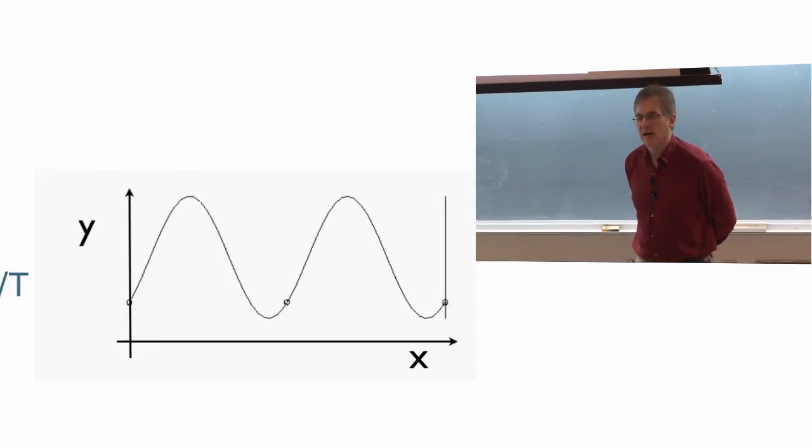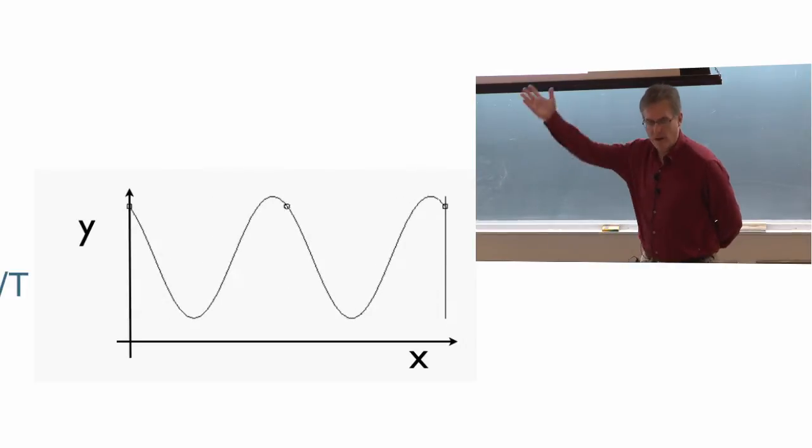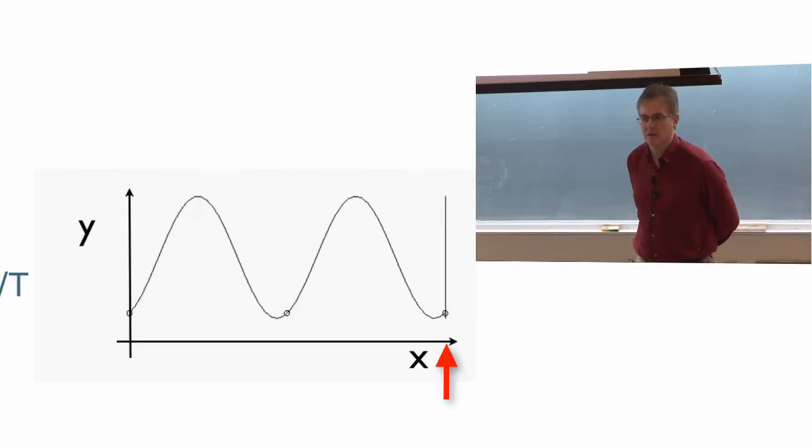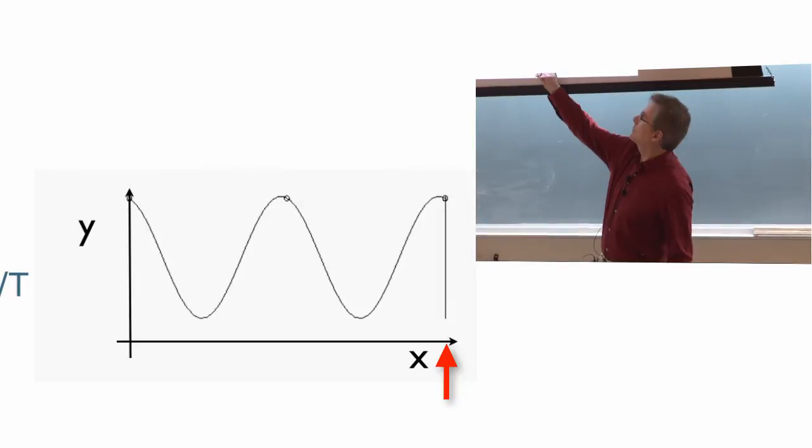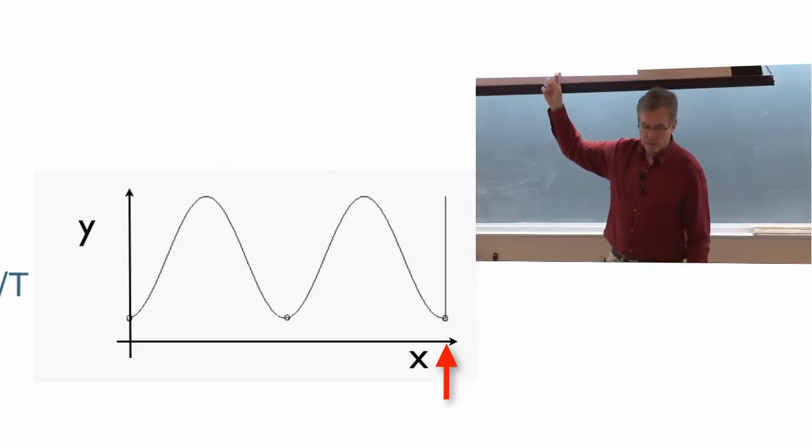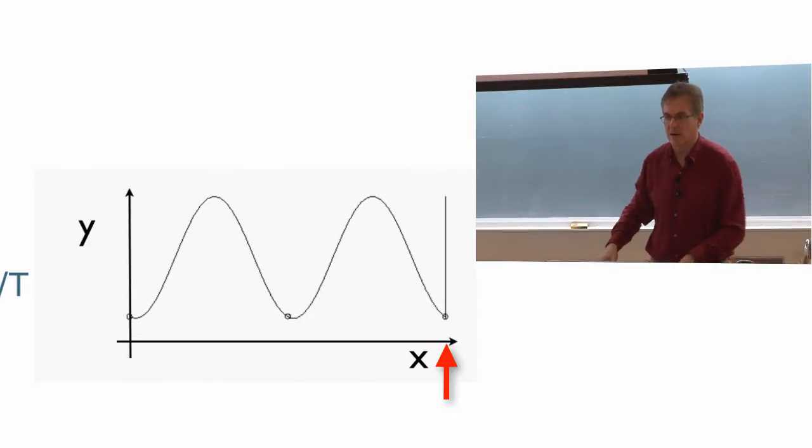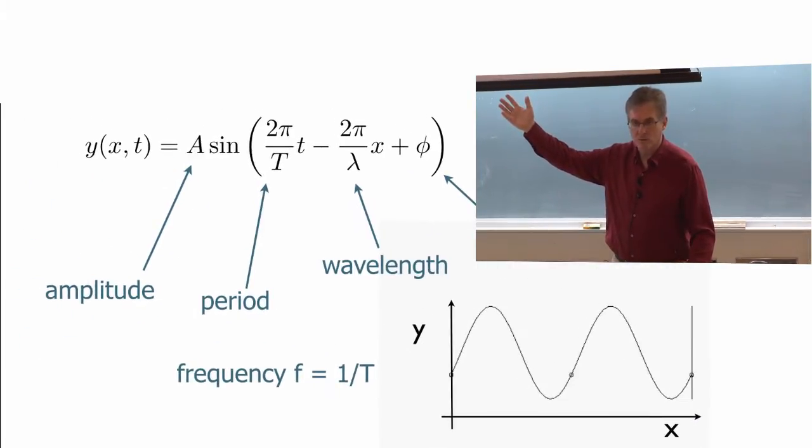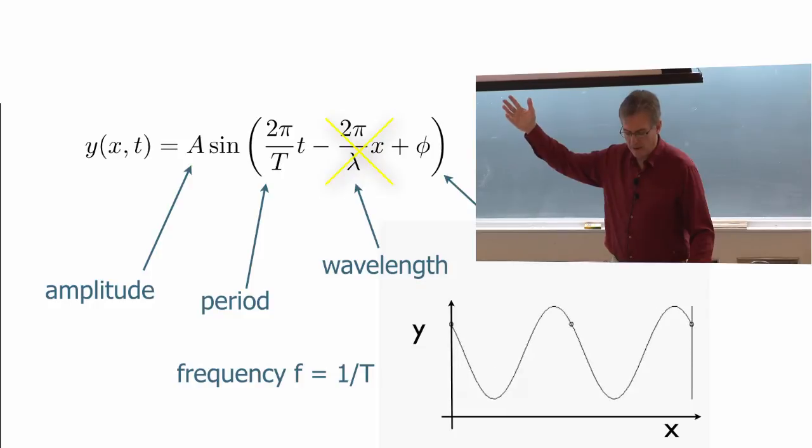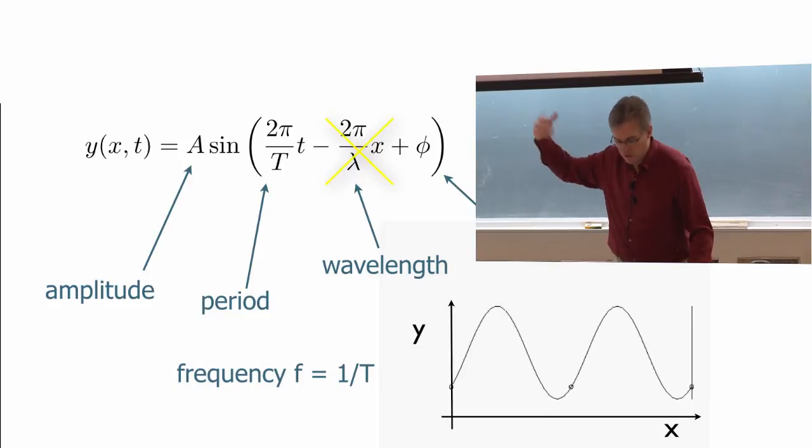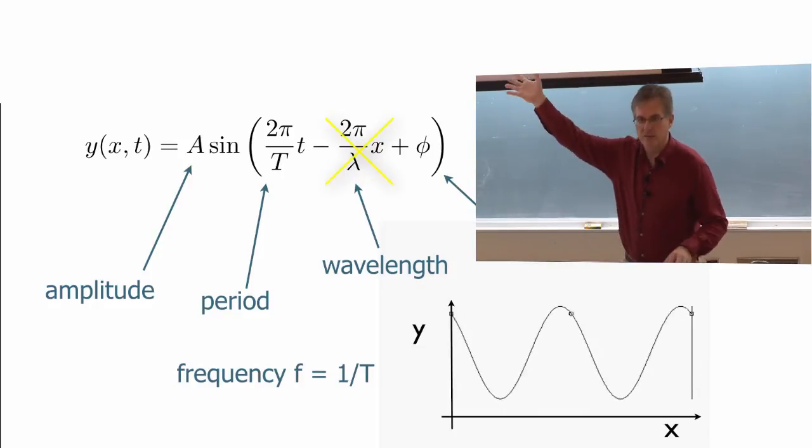So that's like we could, without any loss of generality here, call this x equals zero. And what do we get? We would get the same equation that we had for a simple harmonic oscillator because we would just lose the term that says 2π x over lambda. And we would just have 2π t over T plus phi.